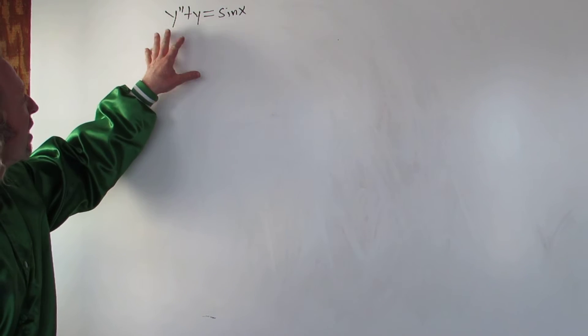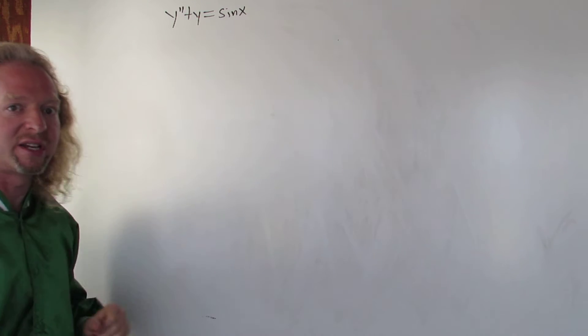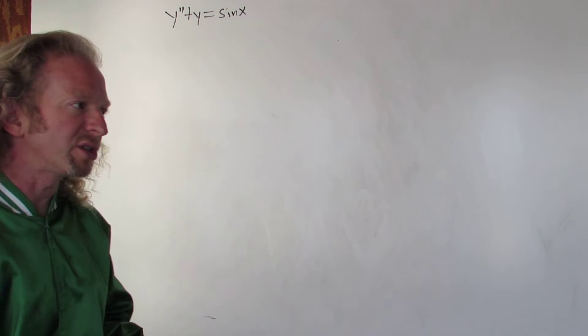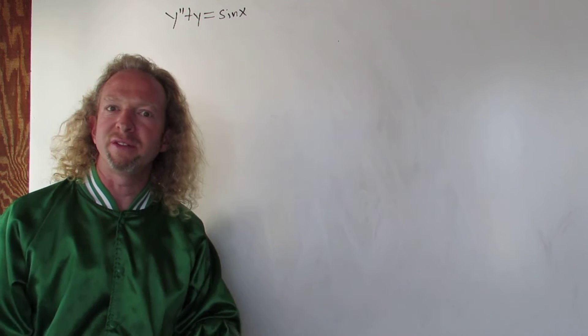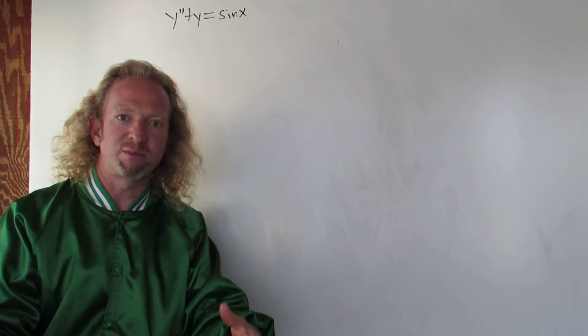Hey, what's up YouTube? So in this problem we have y double prime plus y equals the sine of x. This is a differential equation. There's a couple ways to solve it. Let's solve it using variation of parameters, just as a practice problem.